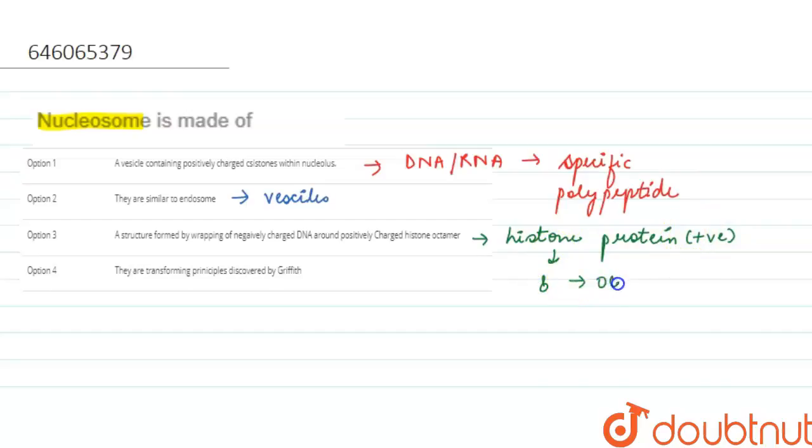And around this octamer we can say that a DNA molecule is wrapped. And when we are talking about DNA molecule, it is negatively charged. So this complex structure is known as a nucleosome. So this is our answer.